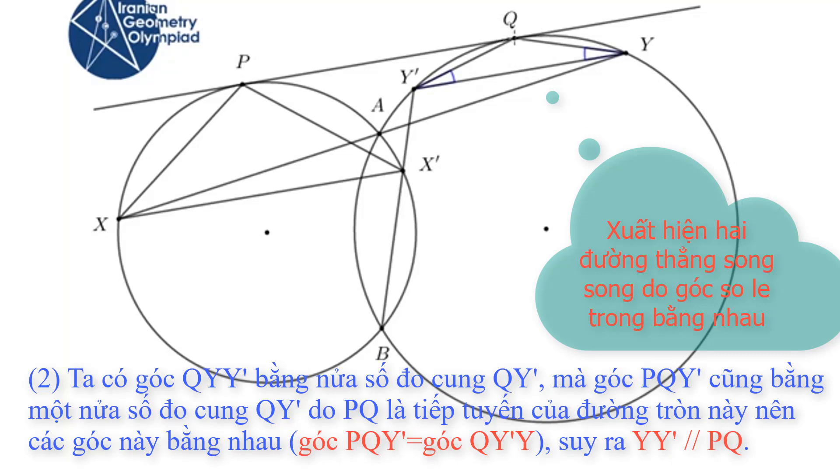We know that angle QYY prime is half of the arc QY prime in this circle. Also, angle Y prime QP is half of the arc QY prime, because QP is the tangent line to the circle.